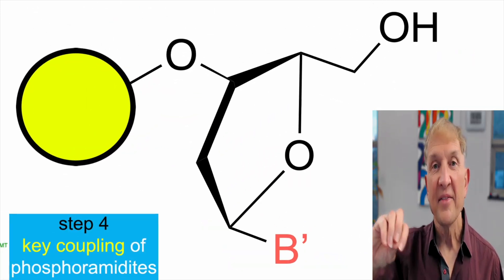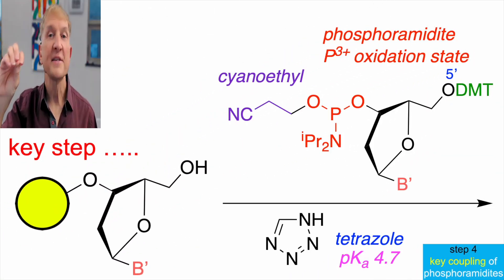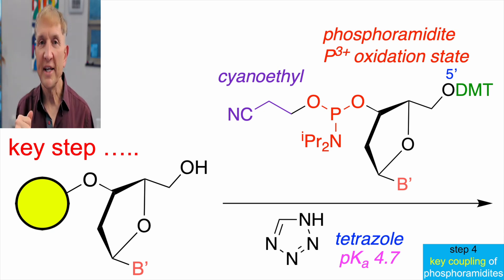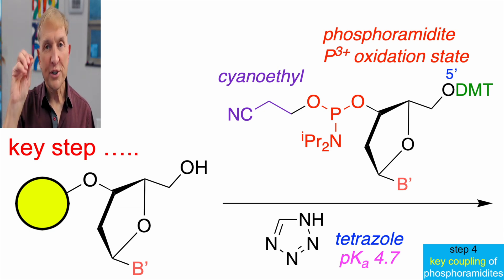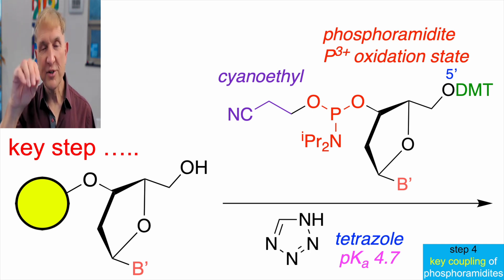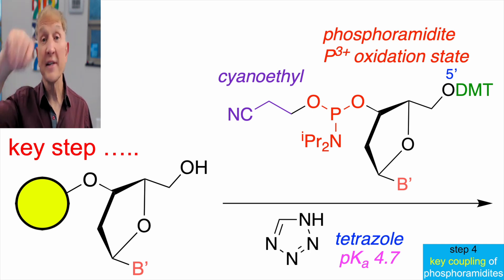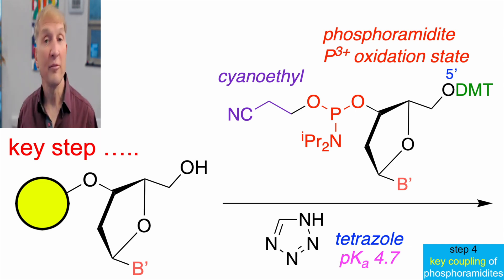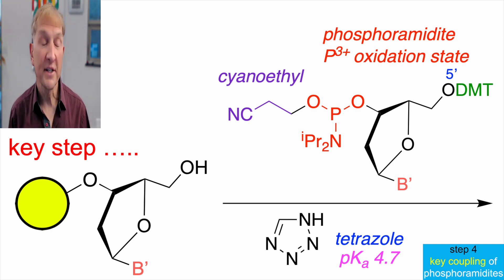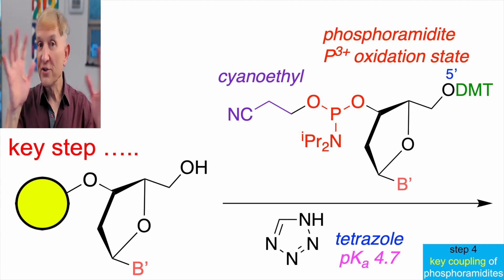Then the key step: the next base is brought in as a protected phosphoramidite. There's a protection on the oxygen for the P–O bond, which is cyanoethyl. That cyanoethyl group keeps the phosphoramidite in the right form to react. There's also another DMT at the 5' position, and three of the four bases are protected on the heterocycle as well.